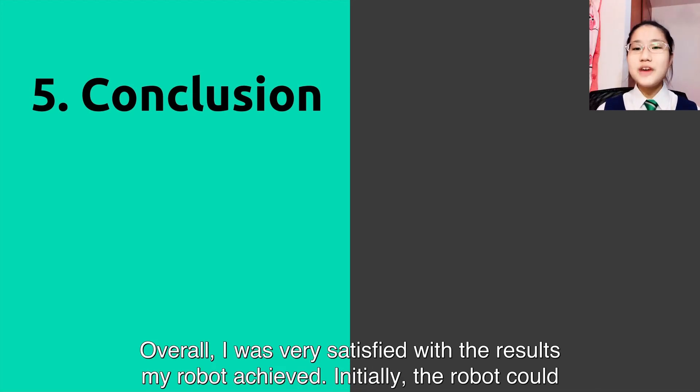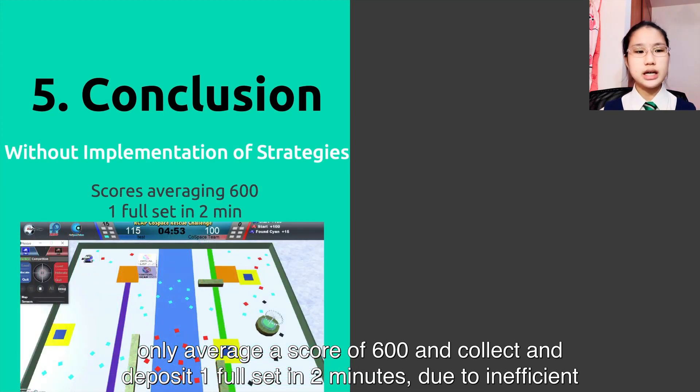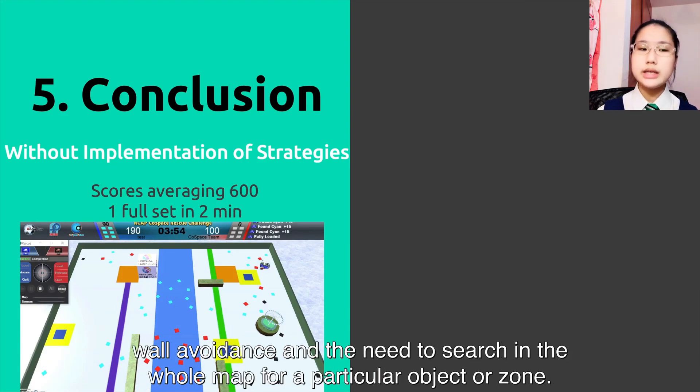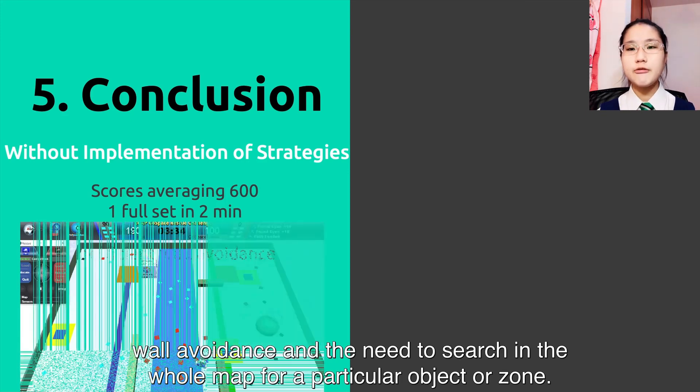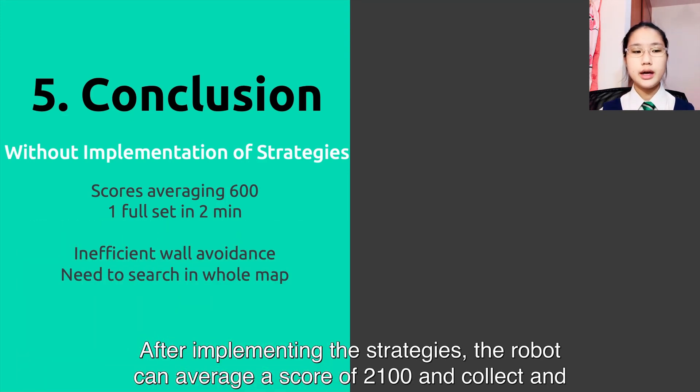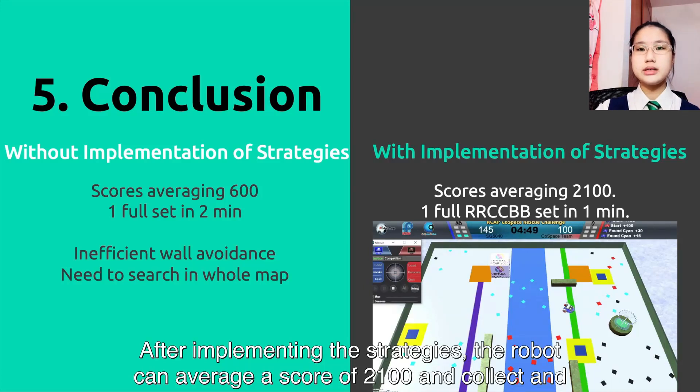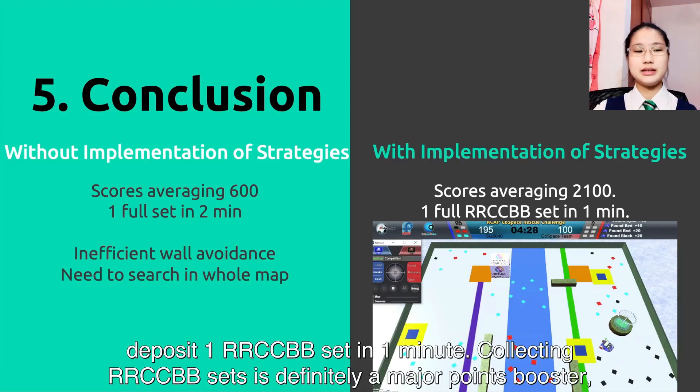Conclusion: Overall, I was very satisfied with the results my robot achieved. Initially, the robot could only average a score of 600 and collect and deposit one full set in 2 minutes, due to inefficient wall avoidance and the need to search the whole map for a particular object or zone. After implementing the strategies, the robot can average a score of 2,100 and collect and deposit one RRCCBB set in 1 minute.